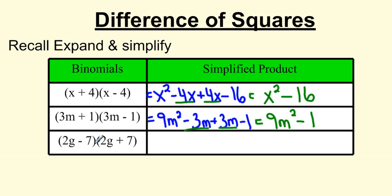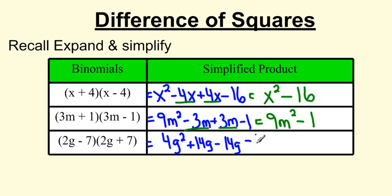The last expansion example: 2g minus 7 times 2g plus 7. F stands for first: 2g times 2g gives 4g squared. O stands for outside: 2g times 7. I stands for inside: negative 7 times 2g. And L stands for last: negative 7 times positive 7. Simplifying by collecting the middle terms — 4g squared plus 14g minus 14g — those two cancel out, and I'm left with negative 49. So the result is 4g squared minus 49.